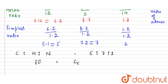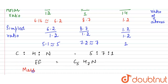Therefore, the empirical formula is C5H7N, since nitrogen has a ratio of approximately 1.